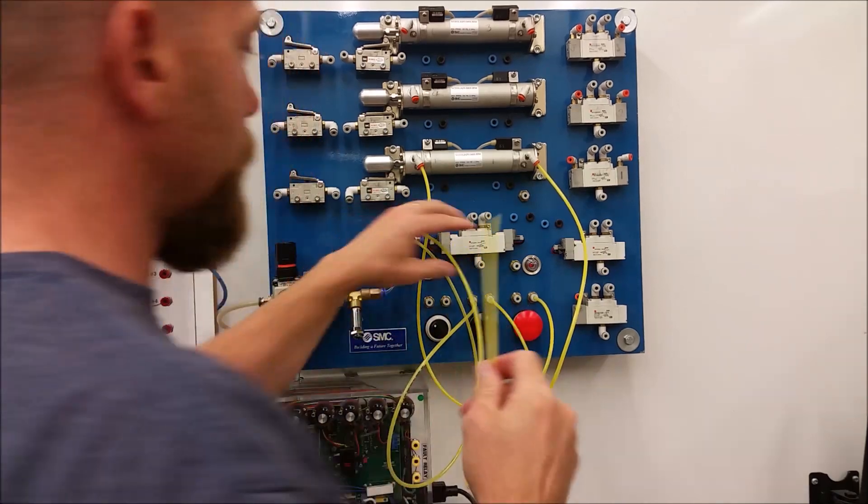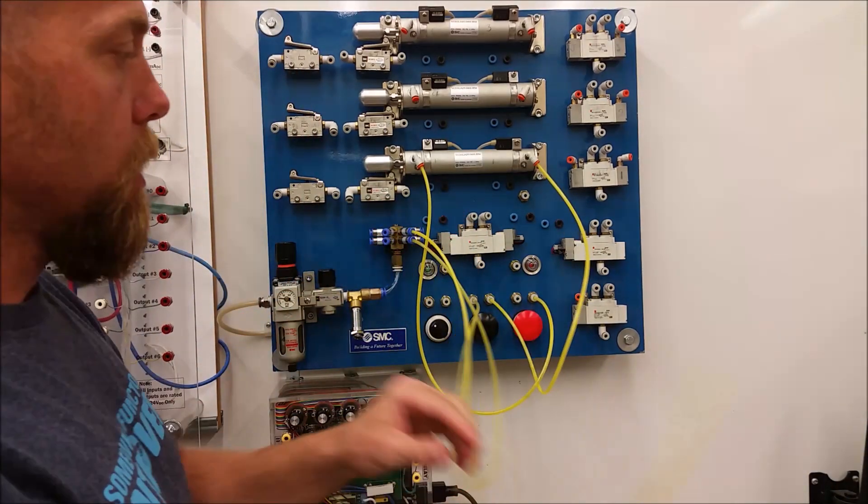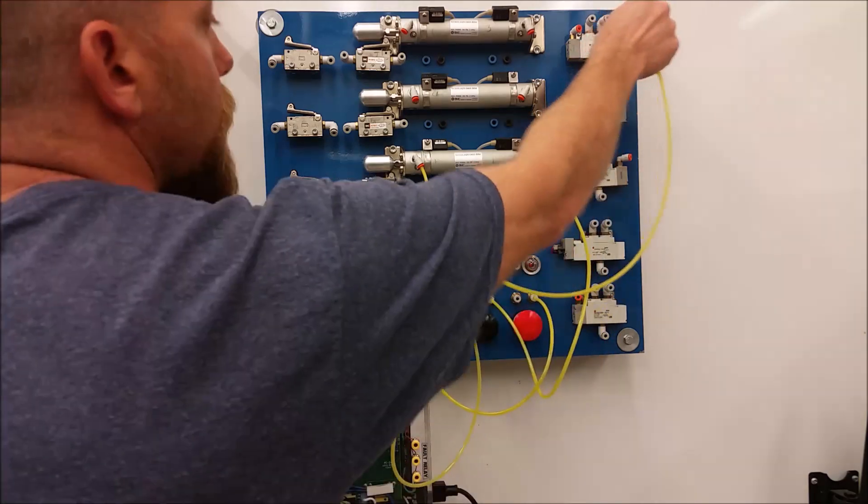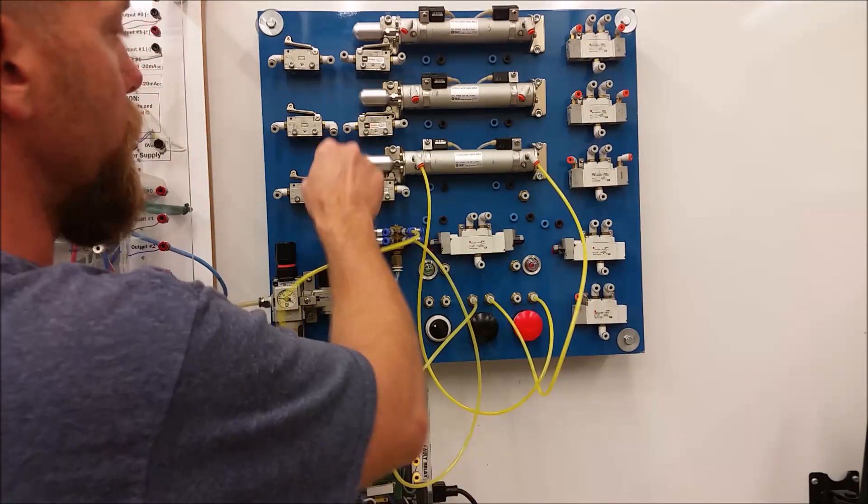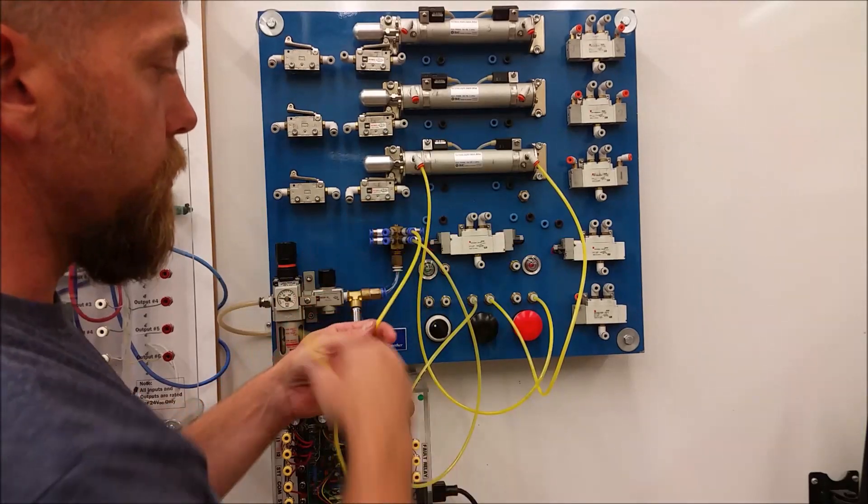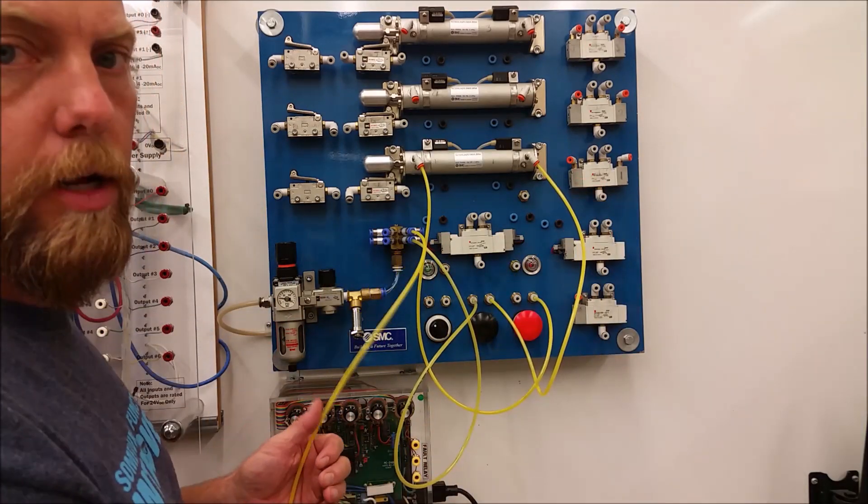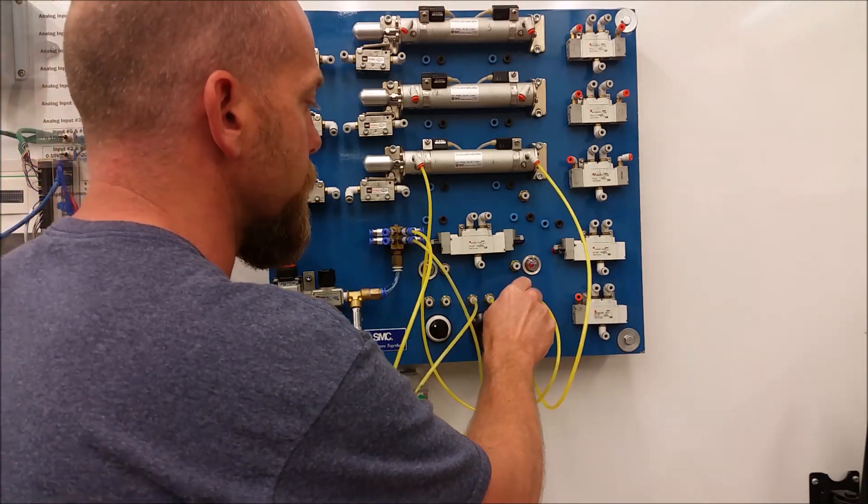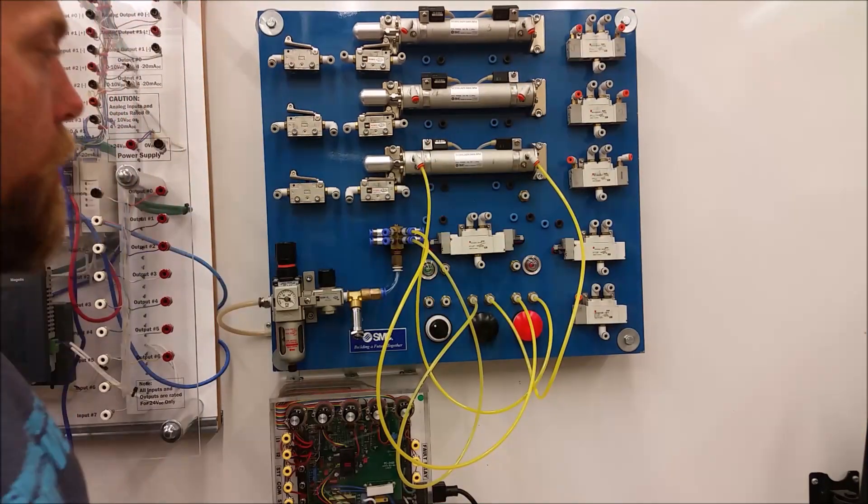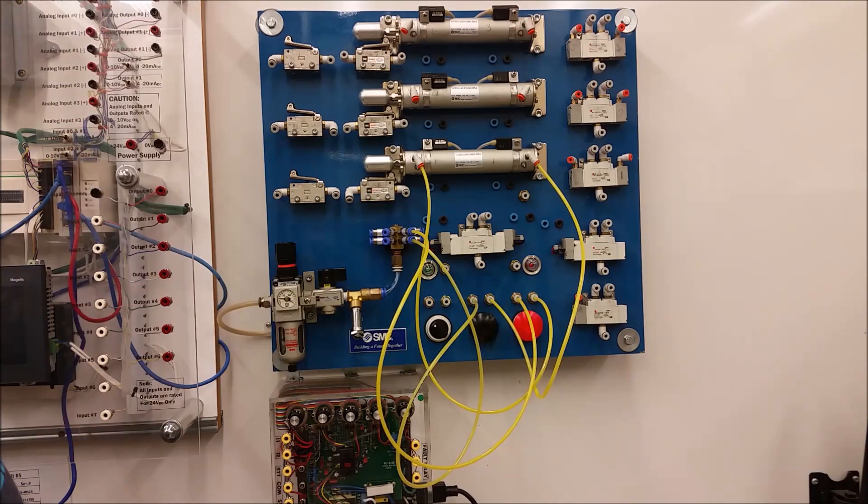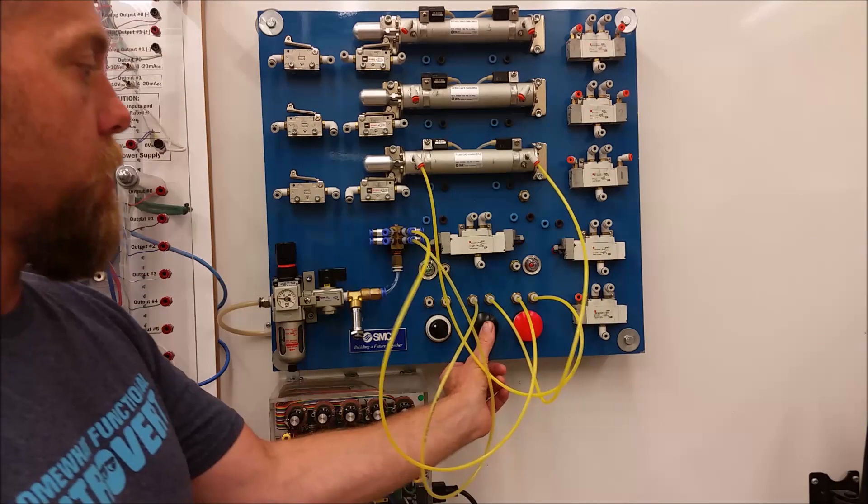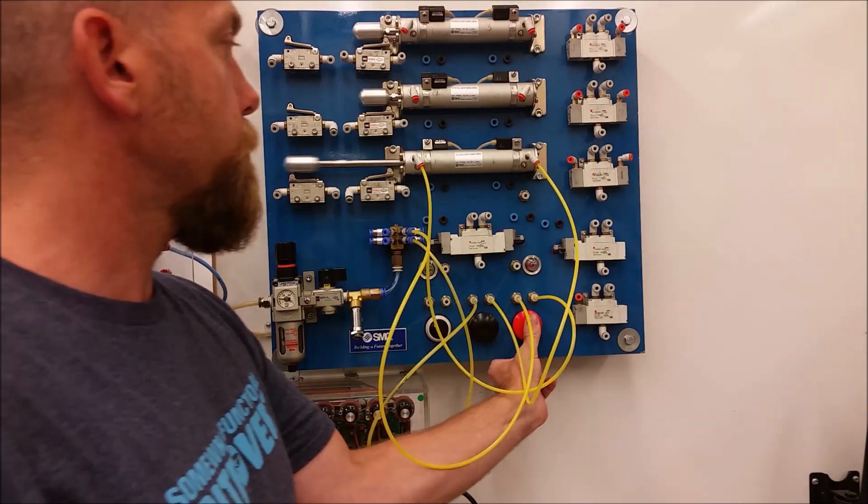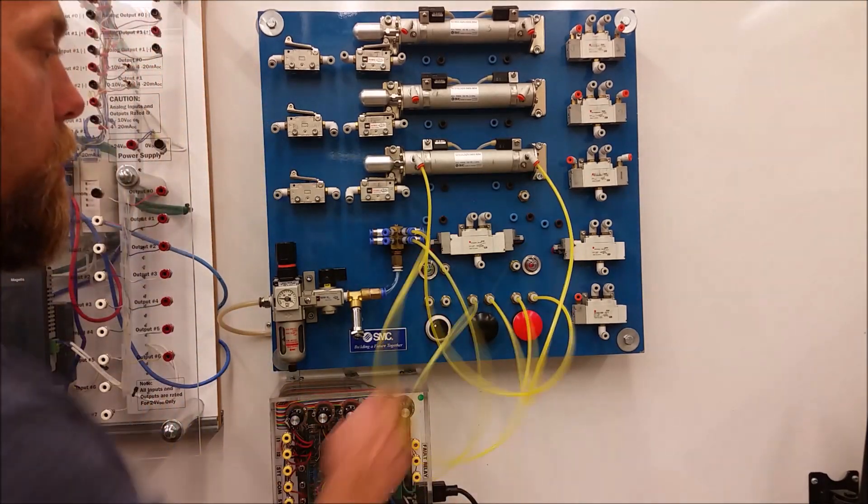One thing I haven't mentioned in the previous videos is that each of these guys are all cut to basically the same length. That way we can go to any of the components on the board. So it is a little bit messy when you've got all these tubes going everywhere, but that way we won't have to cut any new tubes for any of the labs that we're doing. We can reach any of the components. Turn this guy on. And now this guy is going to extend the cylinder, and this guy is going to retract.